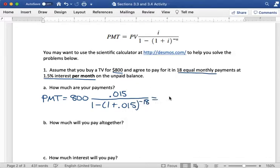So I'll write that down and then part B says how much will you pay altogether? I don't need to use an annuity formula for this. I just need to use the fact that I'm making payments of $51.04 and there are 18 of those payments. So all I need to do here is multiply 51.04 times 18. Do that on my calculator and I will get $918.72.